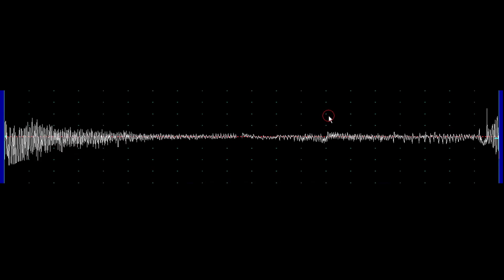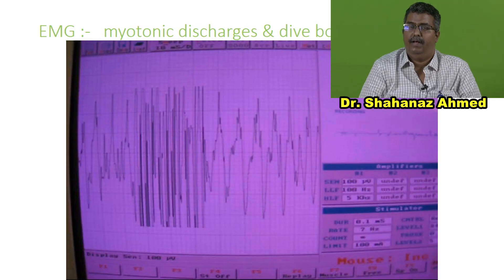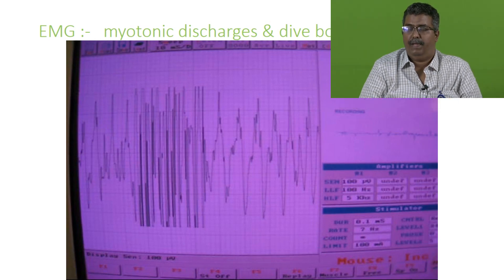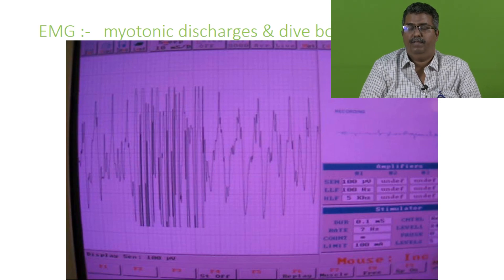EMG shows a dive bomber sound. This is a typical example of a myotonic discharge, which has a dive bomber-like phenomenon — also called an engine revving sound. It is a typical waxing and waning character of repetitive discharges, called myotonic discharges, and this occurs in myotonic dystrophy.